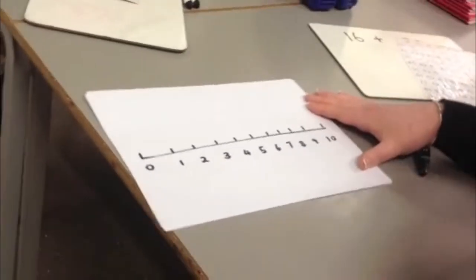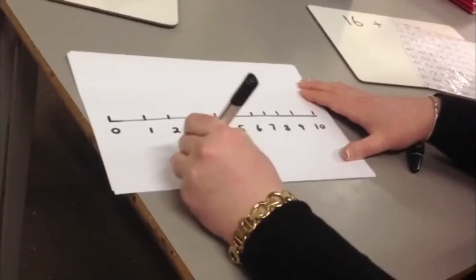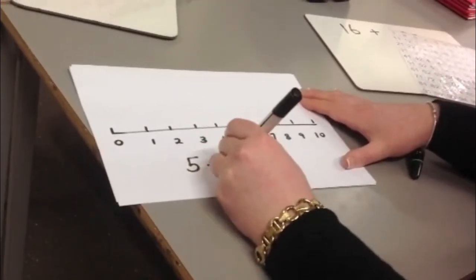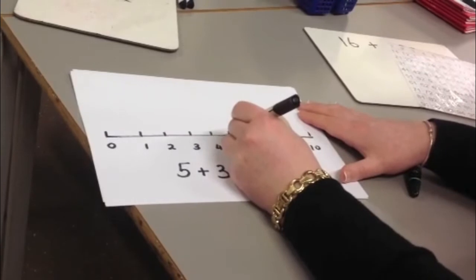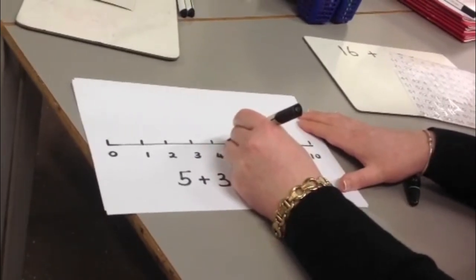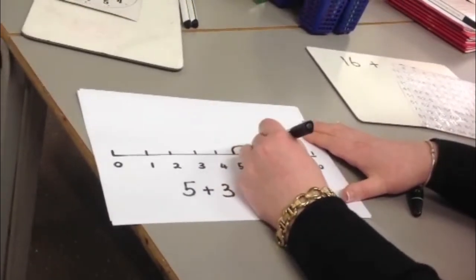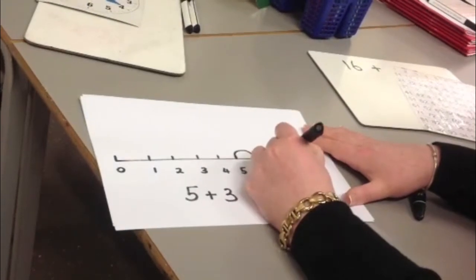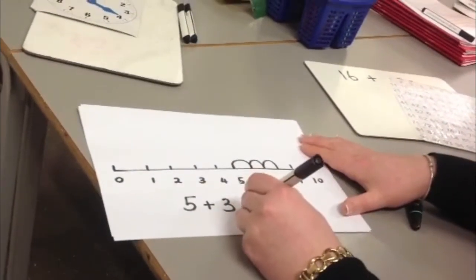If I was doing a sum, like 5 add 3, I'd put my finger on 5 and do 3 jumps: 1, 2, 3, and the answer is 8.